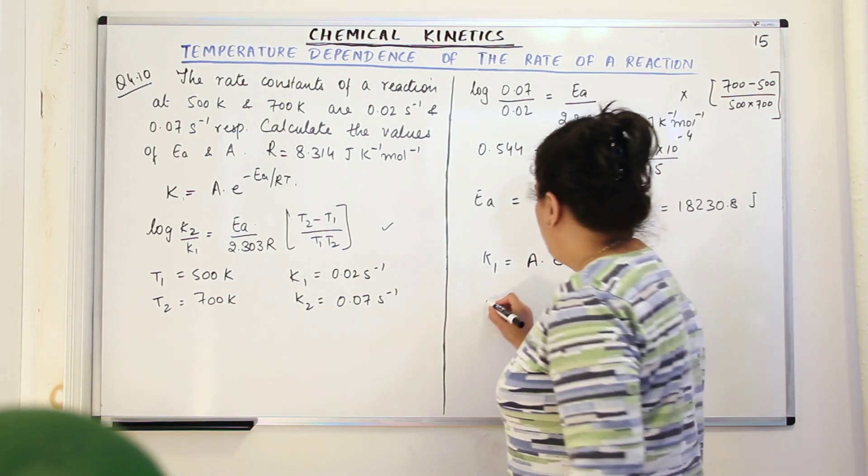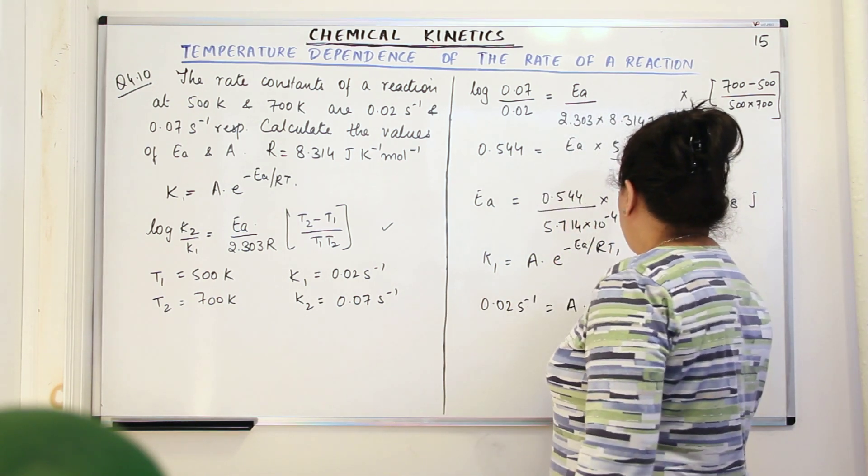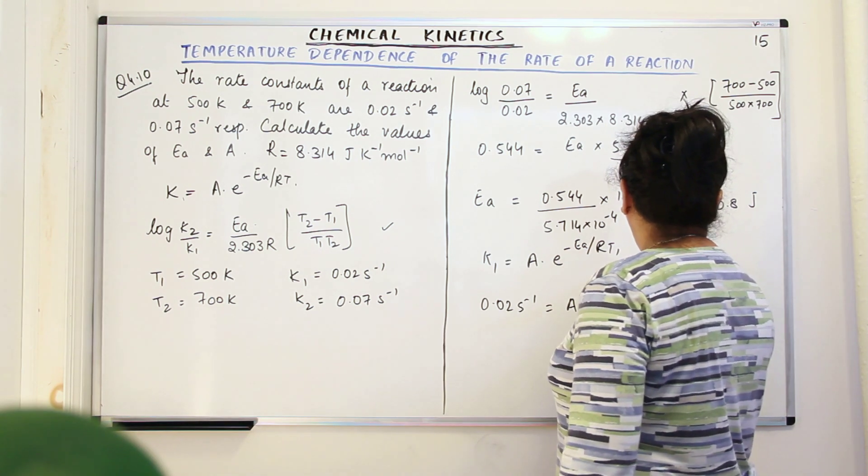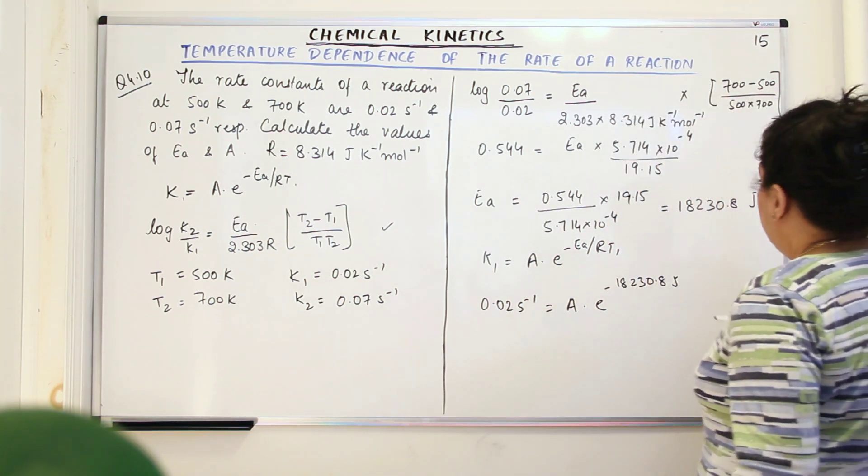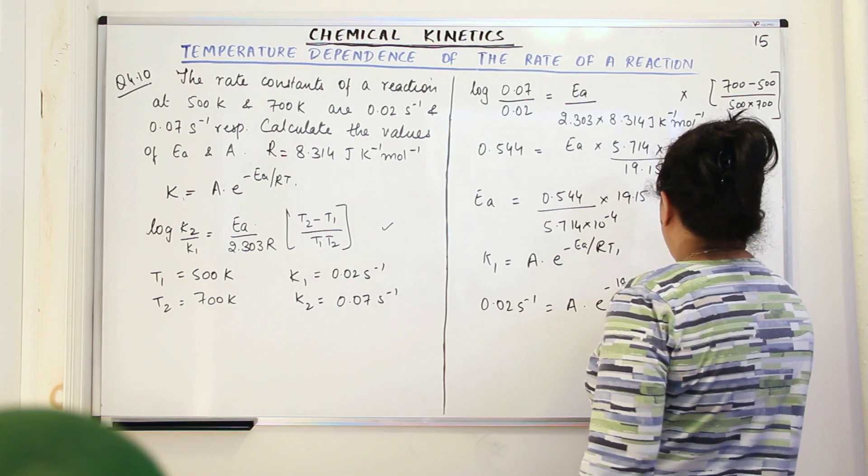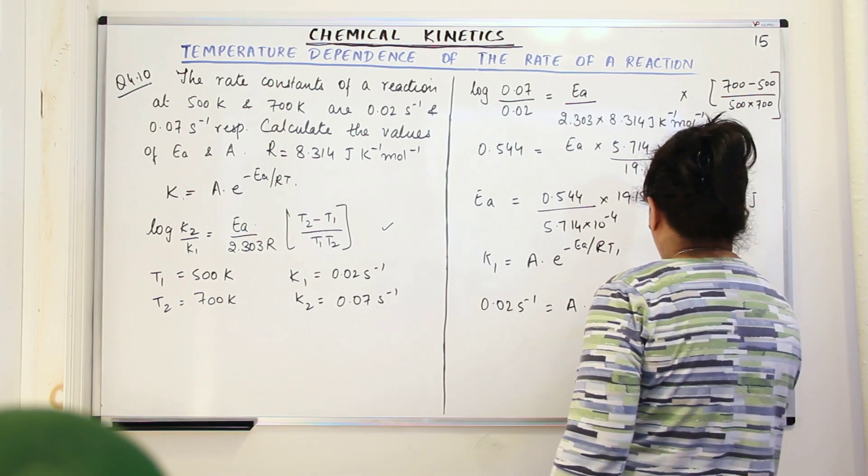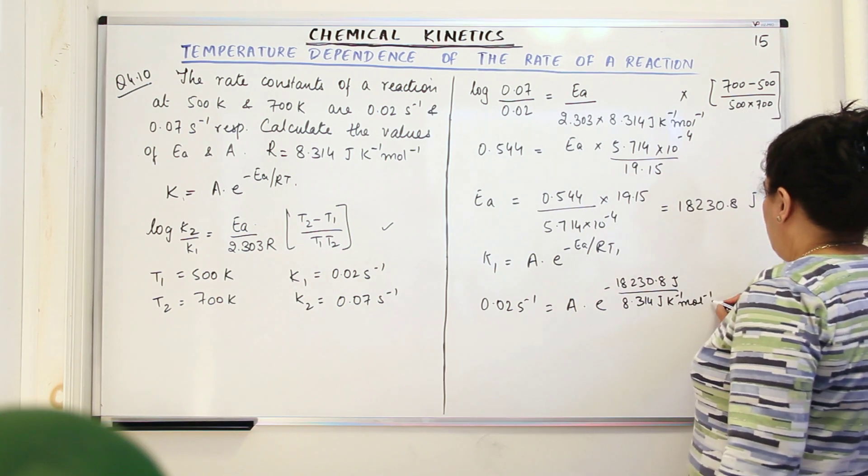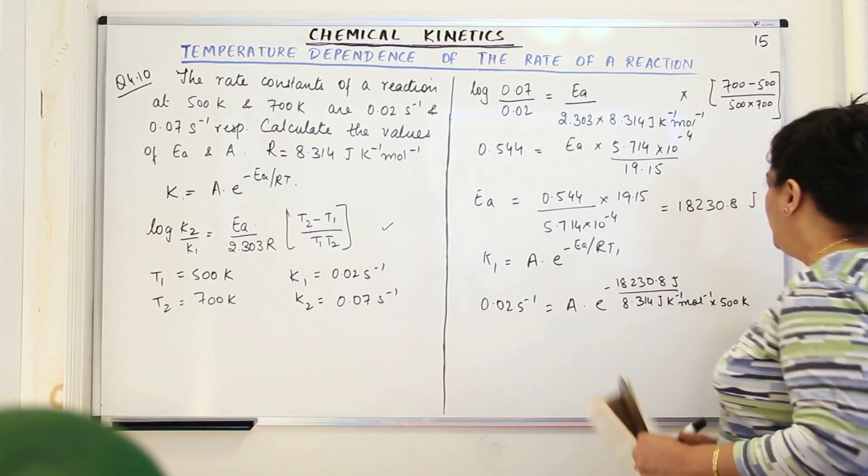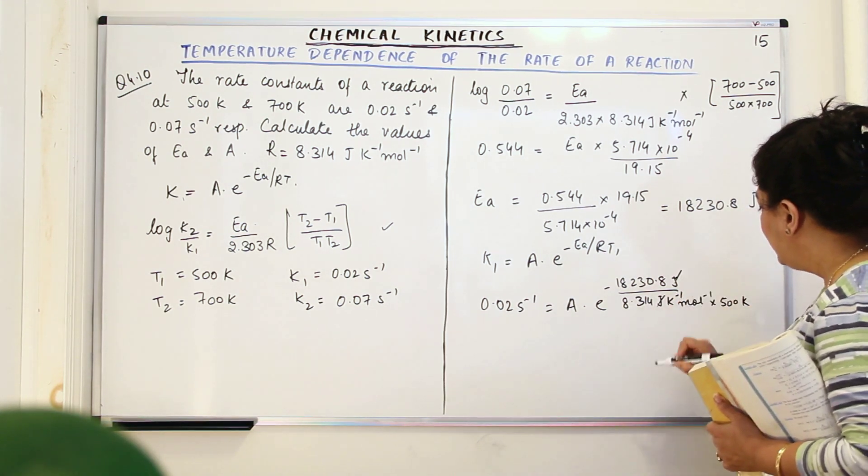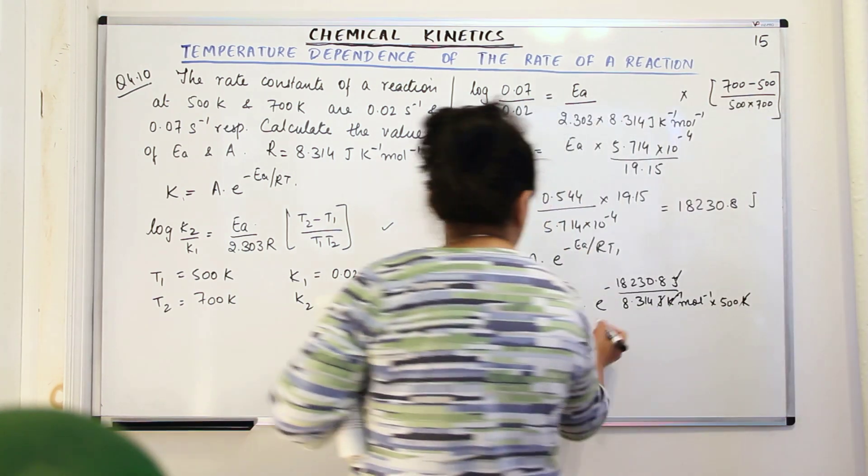Now substitute the values. K1, what is K1? Is 0.02 per second. Is equal to A into E to the power of minus Ea is 18230.8 Joules upon R is 8.314 Joules per Kelvin per mole into T1, that is 500 Kelvin. Now take a look. The Joules and Joules will get cancelled, per Kelvin and Kelvin will get cancelled. You'll be left with per mole here. And from this, when you solve all of this, you'll get the value of A.